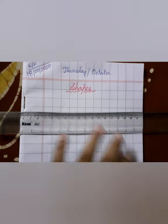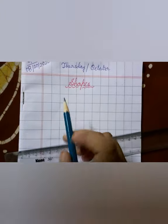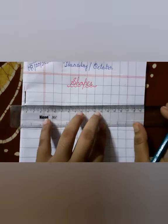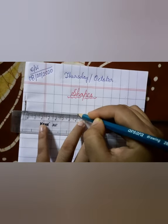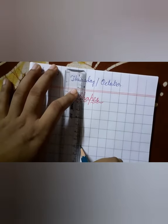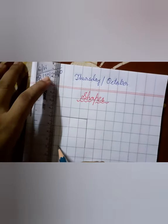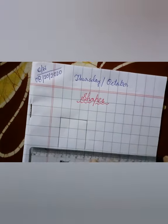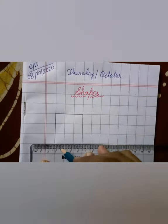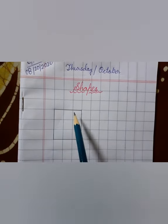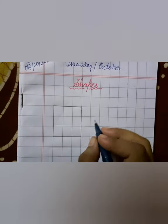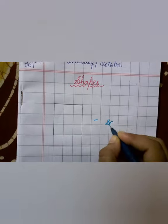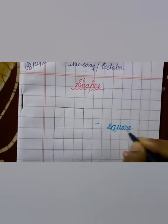To draw a square, use the boxes already in your copy. Take three boxes across — one, two, three — then three boxes down, and three boxes on each remaining side. From all sides, this shape has equal height and equal length, so we name it a square. Let's write the spelling: S-Q-U-A-R-E — square.